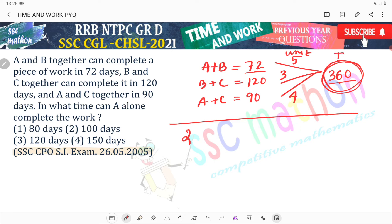T.U.W. A plus C 120 din me karta hai 360 unit of work. T.U.W. A plus B plus C.